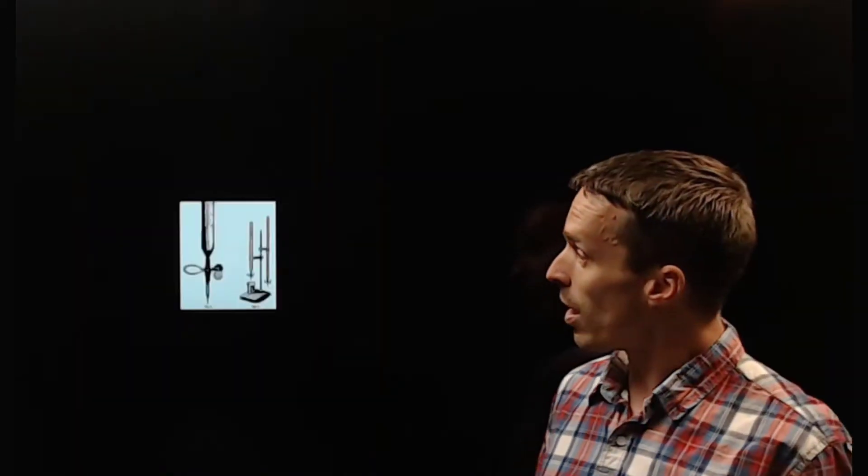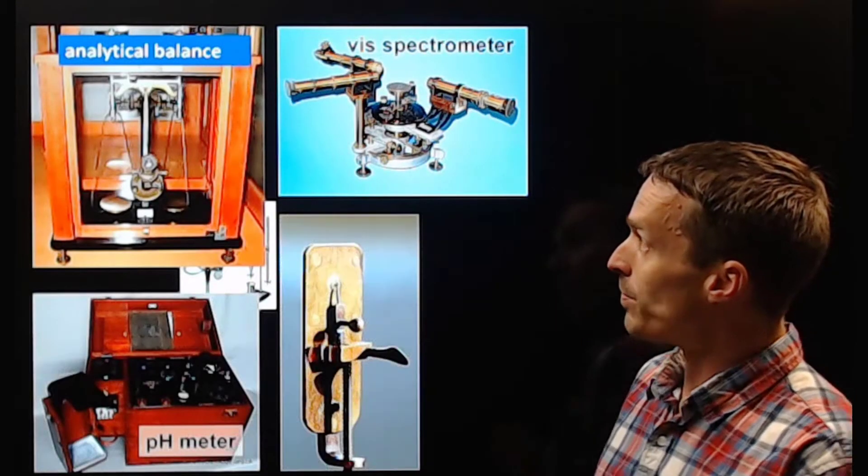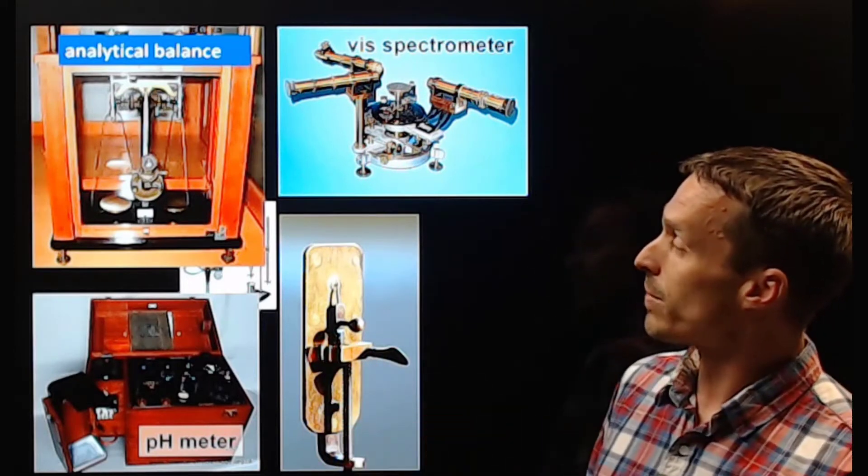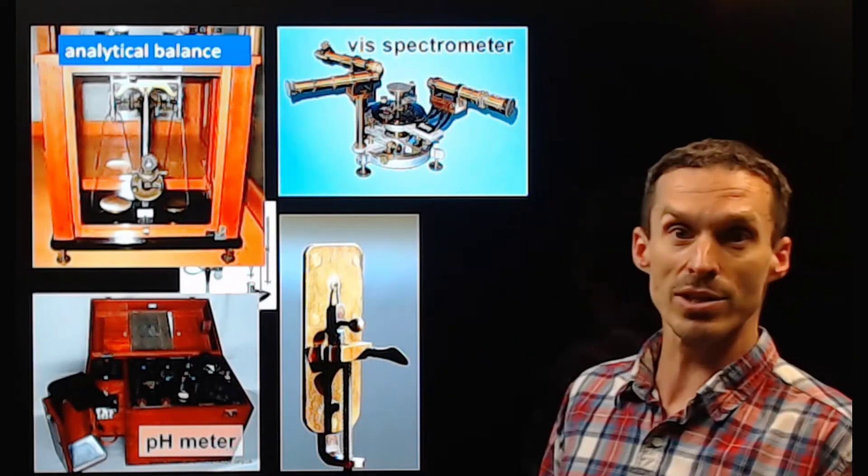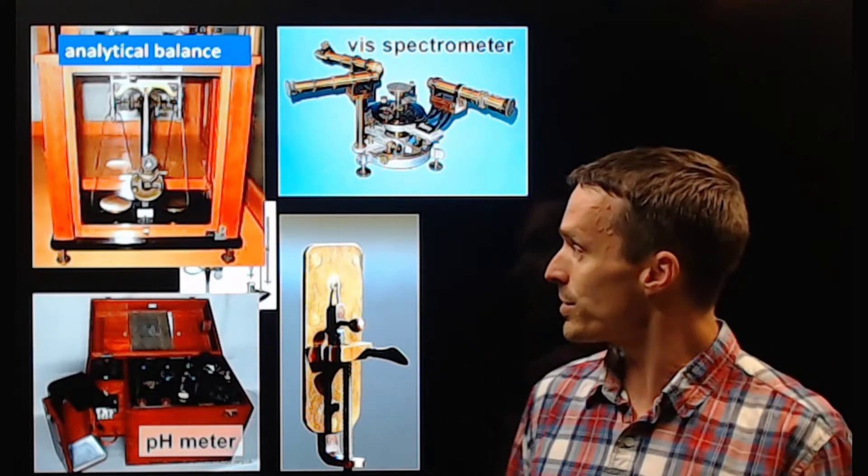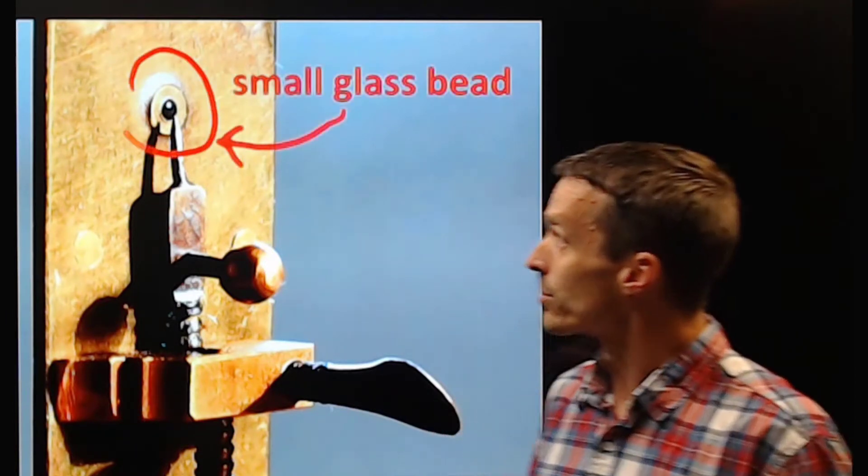Devices have gotten a little bit more complicated over the years. Here's some earlier examples: we have an analytical balance, pH meter, spectrometers, and then my favorite little example, this thing right over here. Wondering if you even realize what that is? Well, it's actually a microscope.